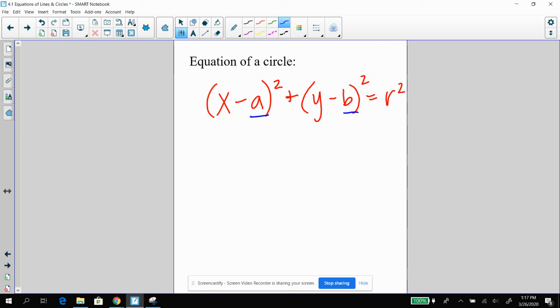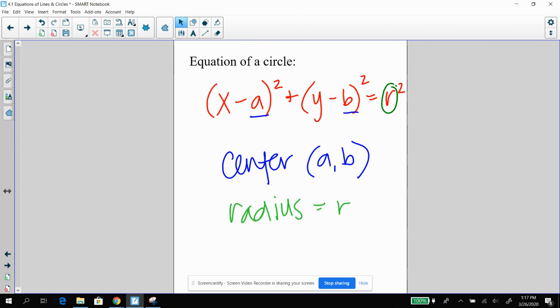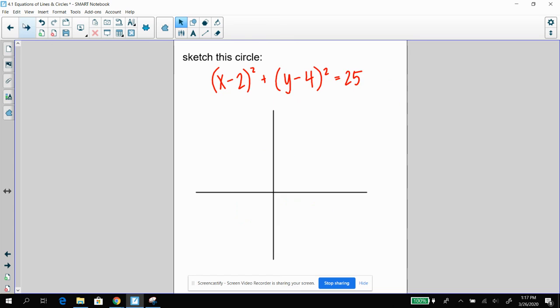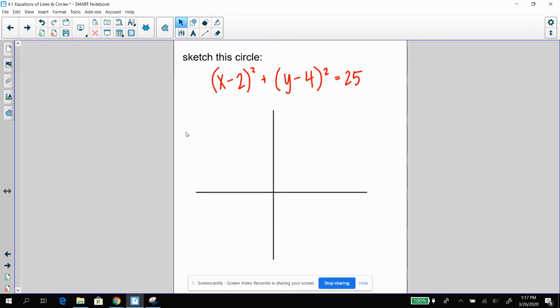So the equation of the circle is this: where a comma b is your center and your radius is r. So your radius is r and the center is a comma b. So sketching this circle, go ahead and try it on your own. Here I know my center is 2 comma 4. So 2 comma 4. I'm just going to estimate where this is. And then I know my radius is going to be the square root of this guy. Because remember this is r squared. So my radius is going to be 5. So I can go like 5 units up, 5 units over, 5 units down, boom. And my circle would look something like that. Cool?